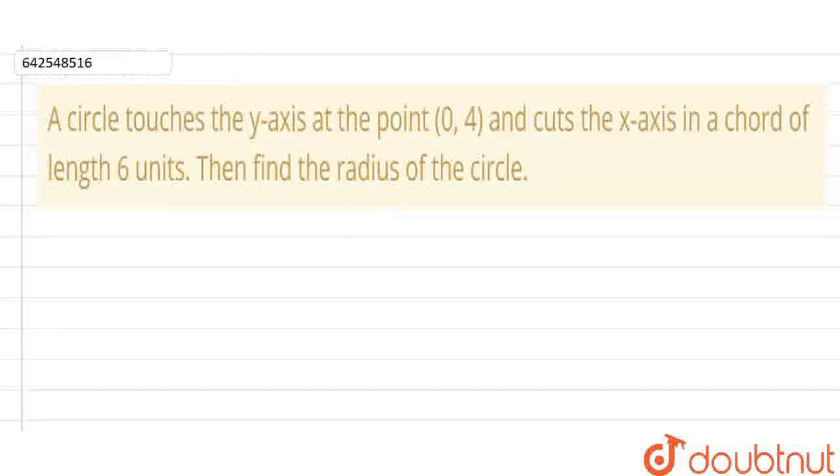So, here we have a diagram. We have a line. This is a line we have. And here, a circle touches the y-axis at 0,4. That means, this is my y-axis. Let's suppose, this is my y-axis. And the circle will touch this axis at 0,4. So, my circle will be this. This is our circle. It's touching the y-axis at 0,4.